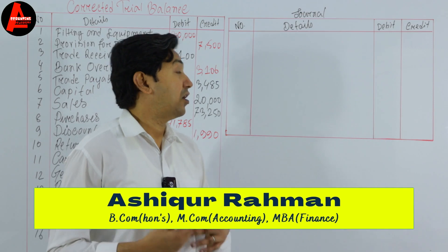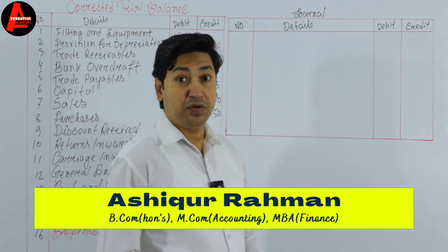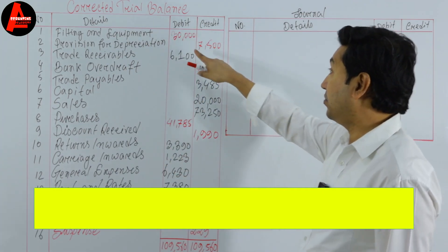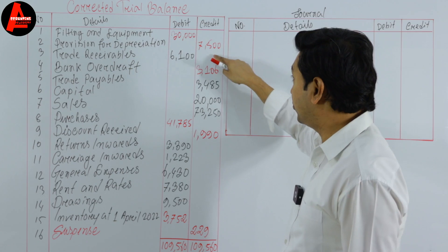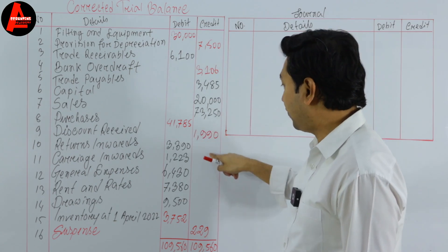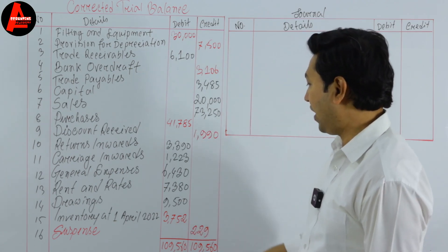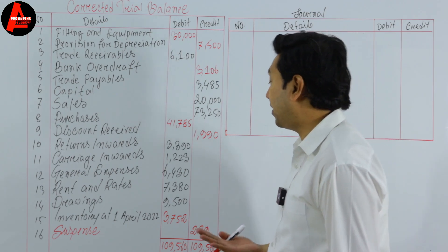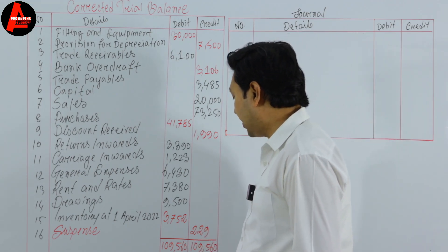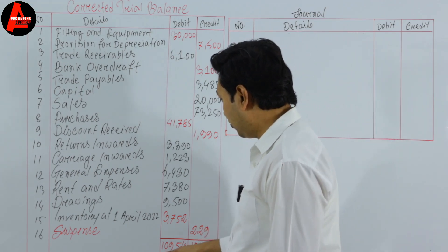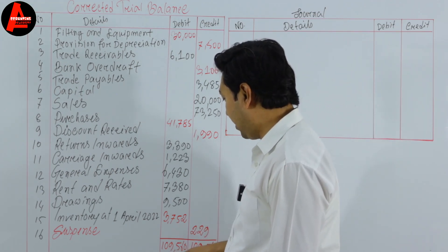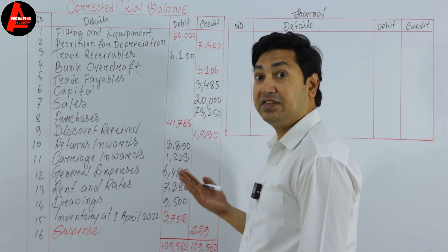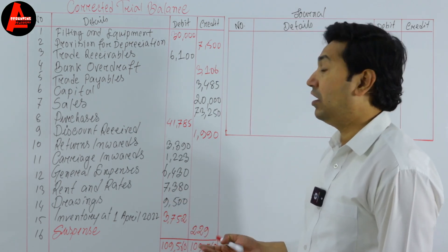In the first part, we prepared this trial balance. We had seven mistakes. We rectified and corrected the trial balance. So we have this same balance, and this trial balance is here balanced.